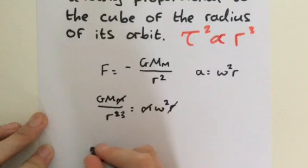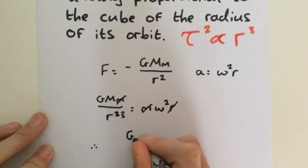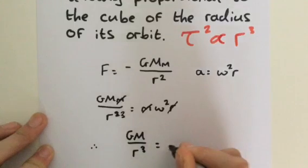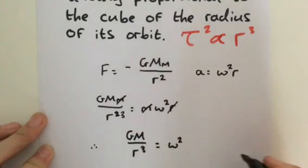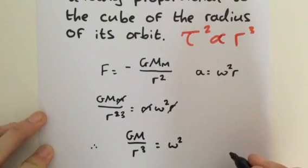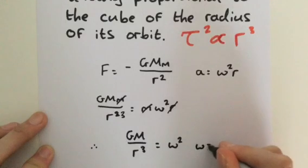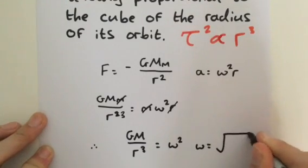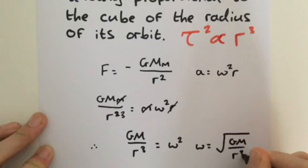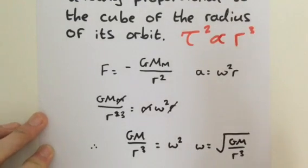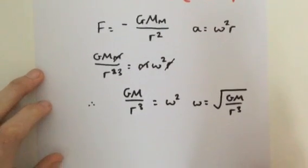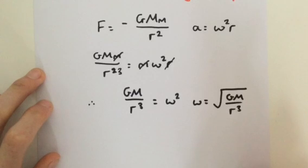Therefore, we get GM/r³ = ω². And therefore, we get ω = √(GM/r³). That is our angular velocity.